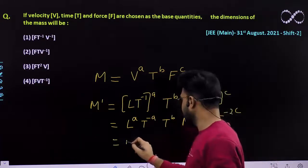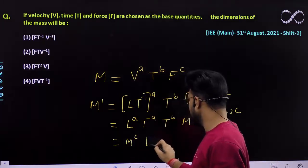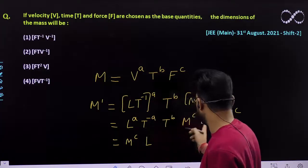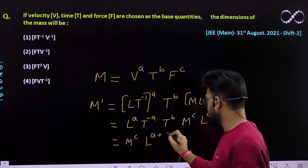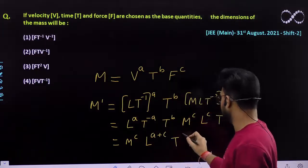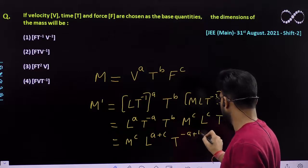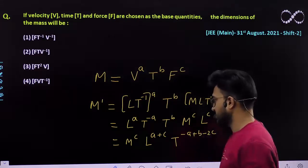So you will be getting M^c, L would be a+c, and T would be -a+b-2c.